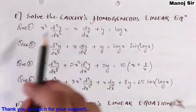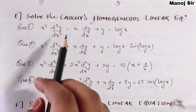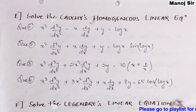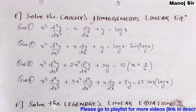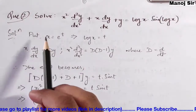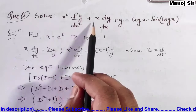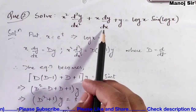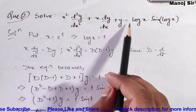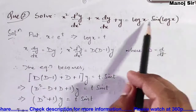By the pattern of x², x, etc. in the coefficients, you can understand that this question belongs to Cauchy's homogeneous linear equation. Coming to the problem, the question says: solve x² d²y/dx² + x dy/dx + y = log(x) · sin(log x).